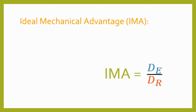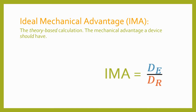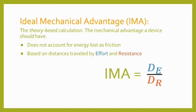Determining mechanical advantage on paper is one thing, but in real life simple machines never quite have the mechanical advantage they're supposed to — their ideal mechanical advantage isn't the same as their actual mechanical advantage. Ideal mechanical advantage, or IMA, is theoretical: it's the mechanical advantage the machine should have. It's calculated using the distances traveled by the effort and resistance forces, so the effort distance over the resistance distance gives you your IMA.